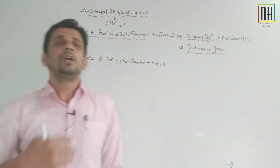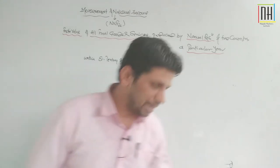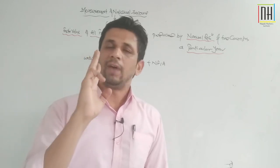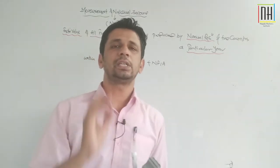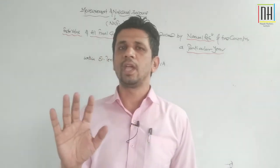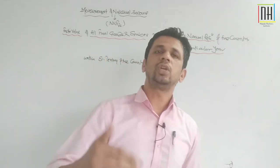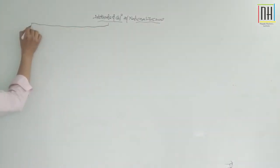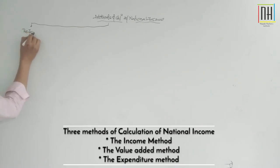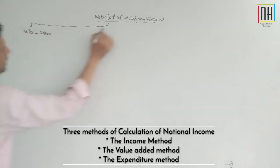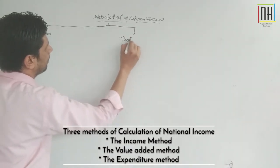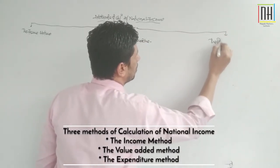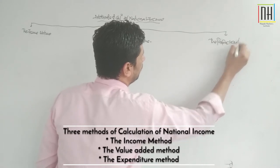Now the question is: how to calculate national income by different methods? We have three methods. First is the Income Method, second is the Expenditure Method, and third is the Production Method — also called the Value Added Method.